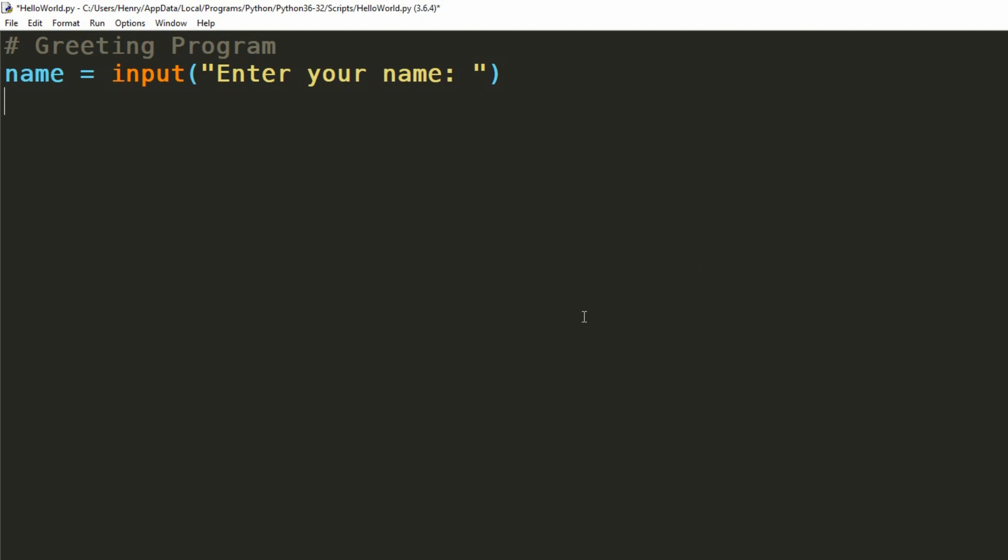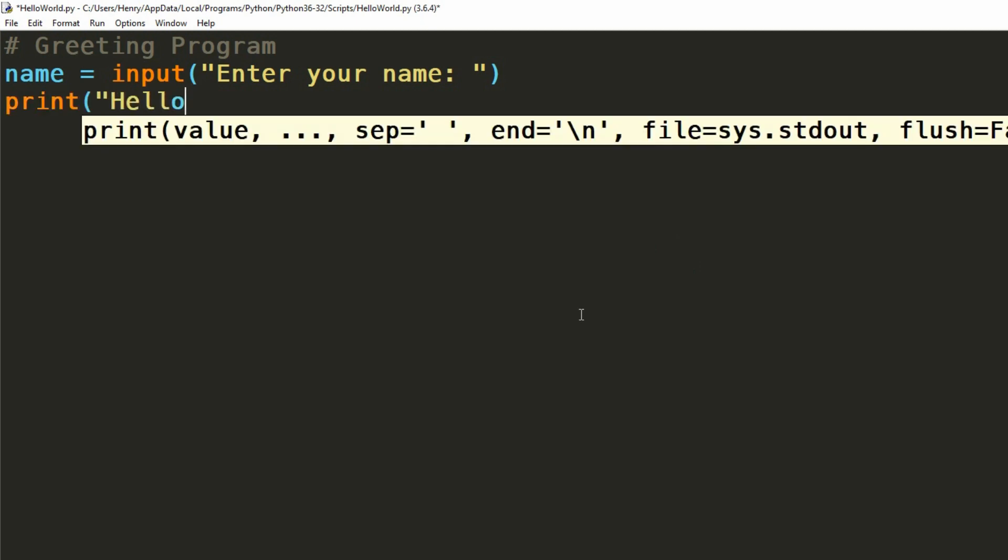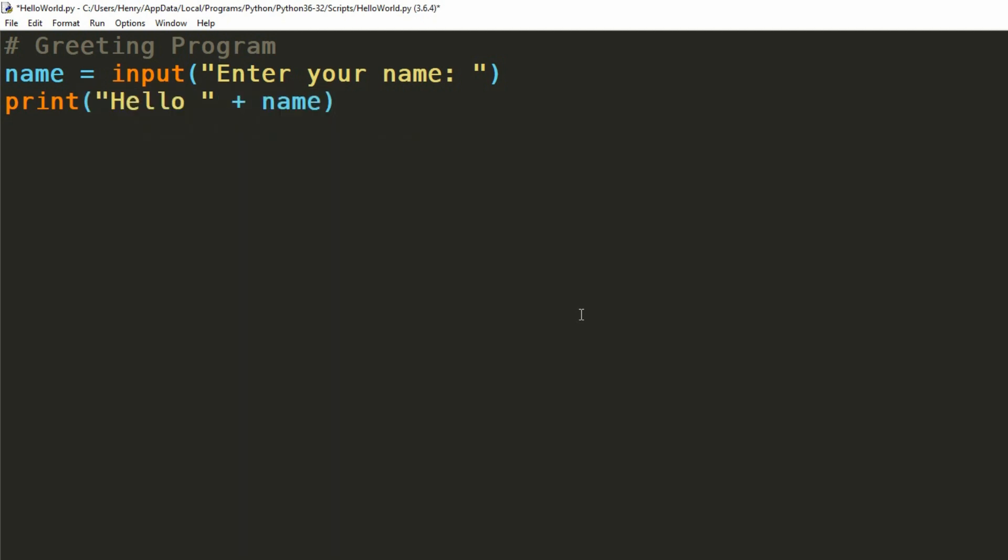Because we now have that information stored, we can then show it back to them with a little greeting message. What we can do here is then print out the message hello, and follow that with the plus, and then their name. What the plus does is it connects the two messages hello, and then whatever they've typed in for their name, together. Now it looks like we're all done. We can hit F5 to run it, or we can go to the top and select run.